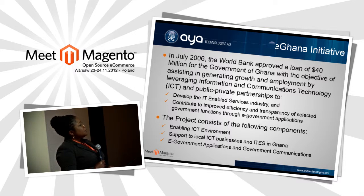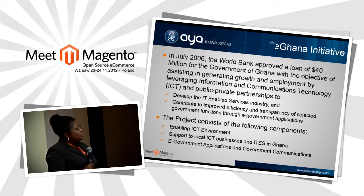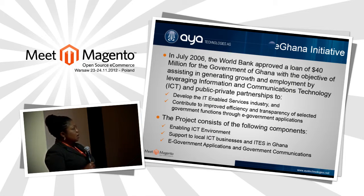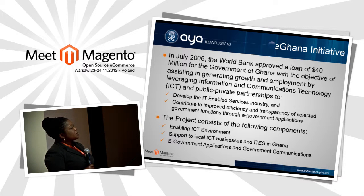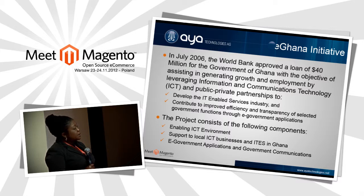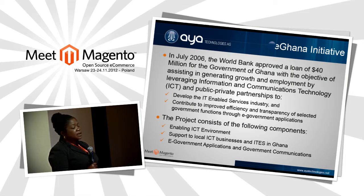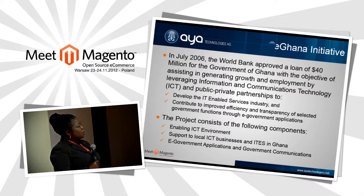Regarding the eGhana initiative — the eGovernment initiatives currently going on in Ghana — in 2006, Ghana obtained a loan of about $40 million from the World Bank. This loan was to enable Ghana expand on its electronic government activities, establish PPP-related projects, and develop the IT-enabled services industry. In addition, the World Bank wanted to assist Ghana to improve efficiency in delivering services from government to the citizenry.